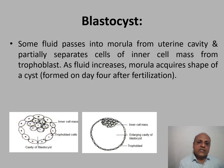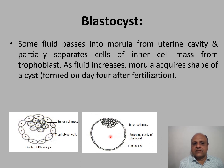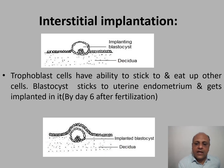Due to increased nutritional requirements, the zona pellucida disappears and fluid from the uterine cavity enters the morula, partially separating the inner cell mass from the trophoblast cells. As fluid increases, the morula acquires the shape of a cyst — this is called the blastocyst, which is formed on day four after fertilization.